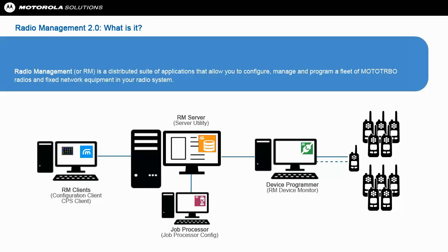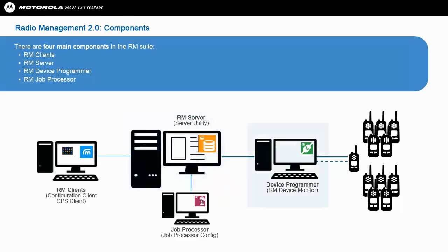There are four main components in the RM suite: RM Client, RM Server, RM Device Programmer, and RM Job Processor.